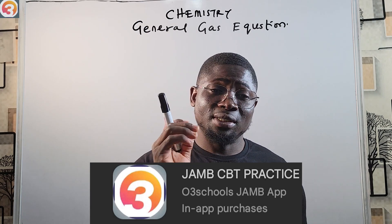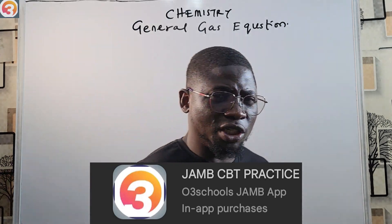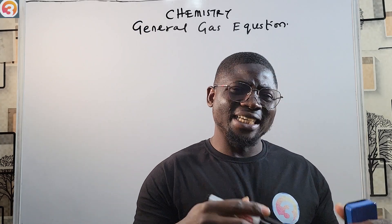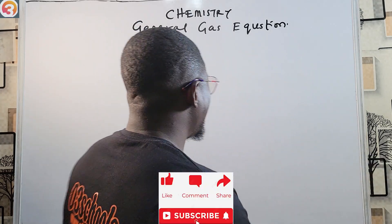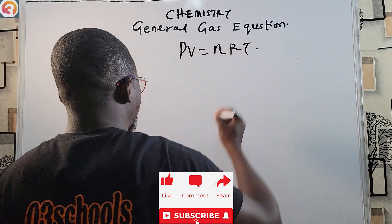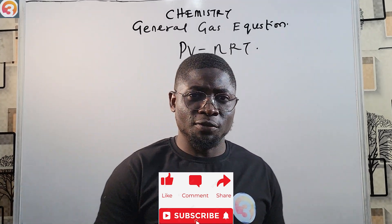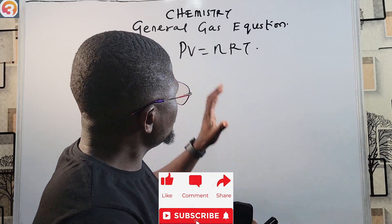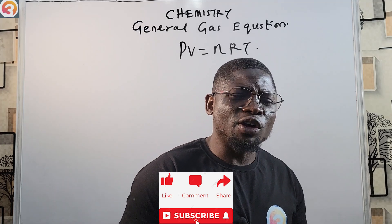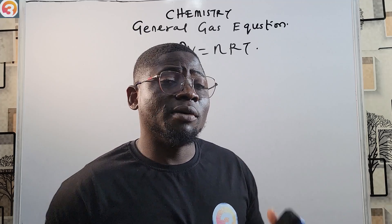So, the general gas equation. If we are following from our previous episode, we talked about the ideal gas equation. From the ideal gas equation we know that PV equals nRT. This is the ideal gas equation. Now if we make the ideal gas constant R the subject of this equation...